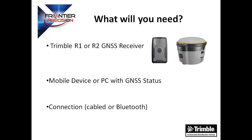You will need three things to get started. First, you will need a Trimble R1, R2, or future compatible GNSS receiver. Second, you will need a mobile device or PC with the GNSS Status Utility application. Lastly, the two devices will need to be connected via a provided cable or Bluetooth pairing. Once we are set up with those three things, we can begin configuring our receiver for field use.